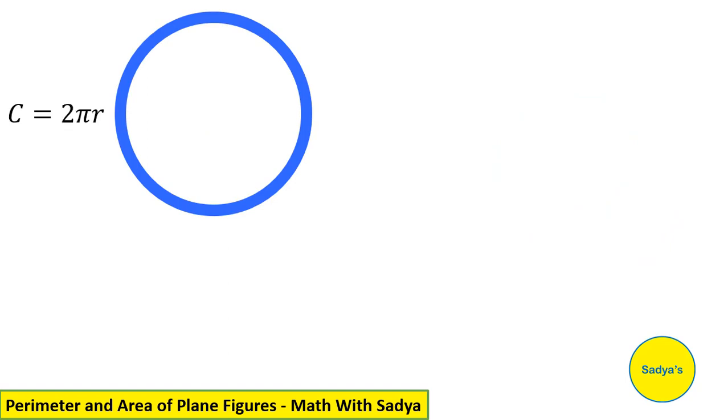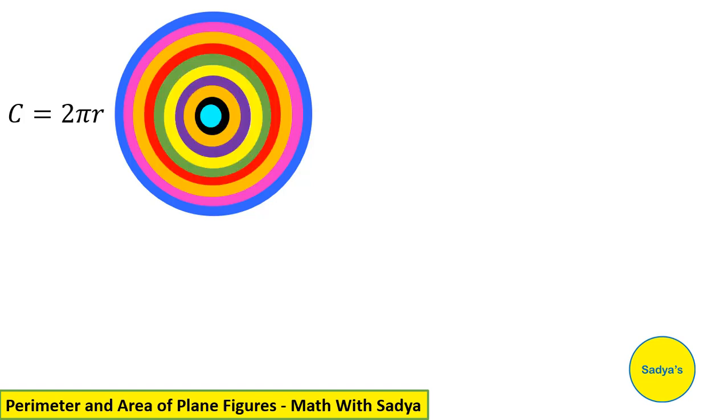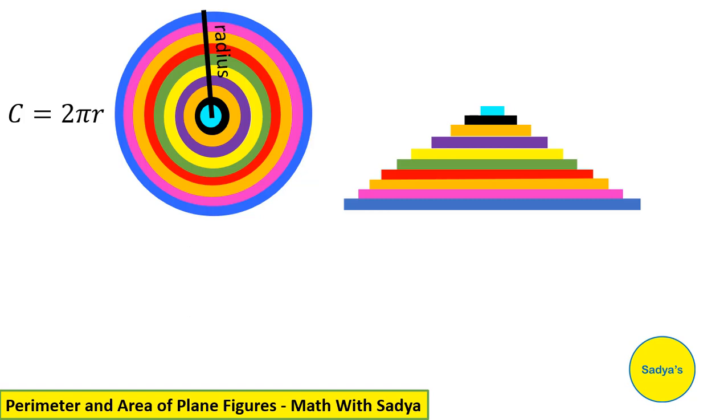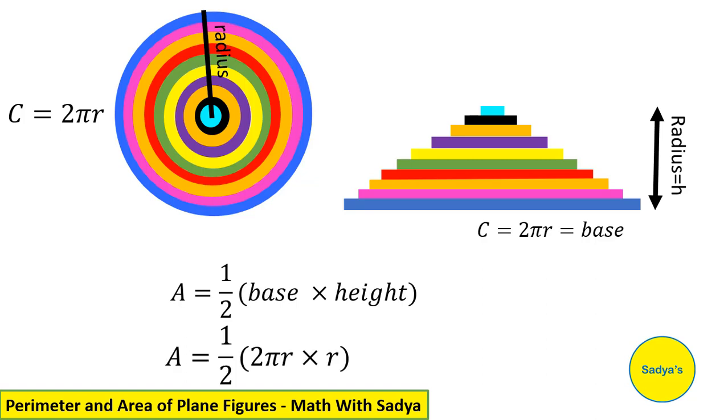Suppose we have a circle whose circumference is 2 pi r. Let's draw some circles inside this circle. Radius of blue circle is r. If we cut the circle along the radius, we will have something like this. A pyramid or a triangle. For this triangle, base would be this measurement, which is 2 pi r. And height of this triangle would be equal to radius. We know the formula for area of a triangle is half base into height. When we substitute 2 pi r in base and radius which is r in height, this 2 and this 2 will cut and what we get is pi r square. So, area of a circle is equal to pi r square.